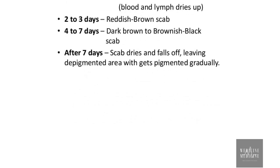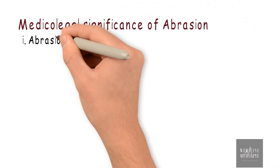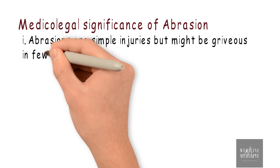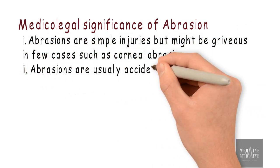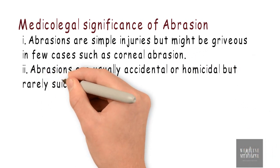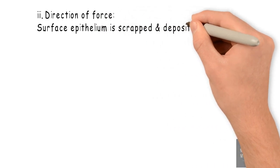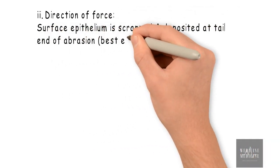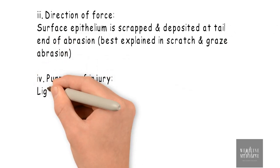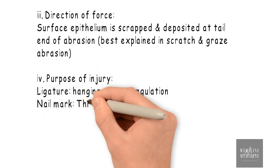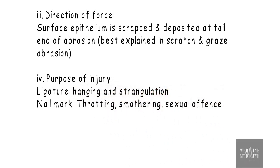The most important part is the medico-legal significance of abrasion. Abrasions are simple injuries but might be grievous, as in the case of corneal abrasion. Abrasions are usually accidental or homicidal but rarely suicidal. One can ascertain the direction of force by looking at an abrasion. Similarly, the purpose of injury can be explained by the abrasion — such as abrasion due to ligature explains hanging and strangulation, while abrasion due to nail marks explains throttling, smothering, or sexual offense.